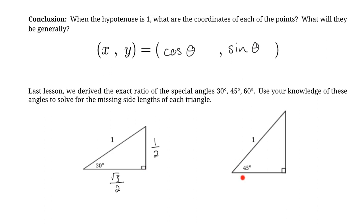For the 45° angle, the other angle at the top is also 45° if the right angle is 90°. The bottom side is our x-coordinate: cos(45°) = 1/√2. The vertical side is our y-coordinate: sin(45°) = 1/√2 as well. So those are the missing side lengths for the 45° triangle on the unit circle.